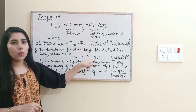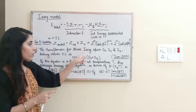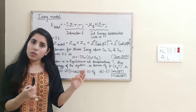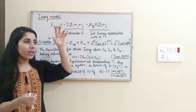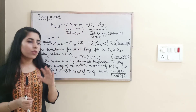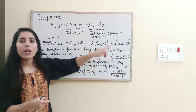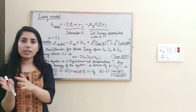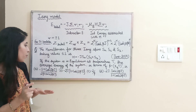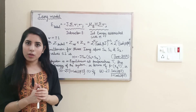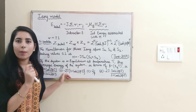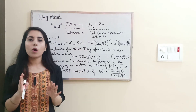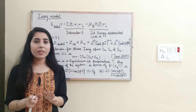Now here is your practice question: S₀, S₁, and S₂ are Ising spins, each taking values +1 or −1. Make a table listing all possible values of S₀, S₁, and S₂, then write the total energy using the given Hamiltonian. You need to find the average energy of the system.